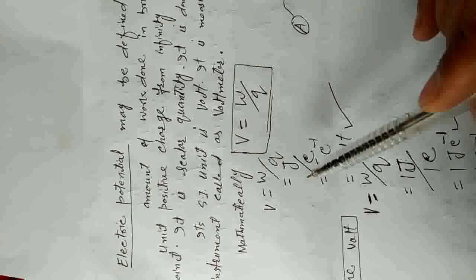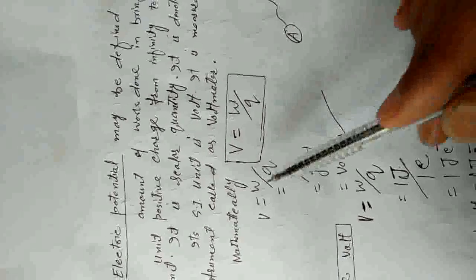We derive the SI unit of electric potential from V = W/Q. The SI unit of work is joule and the SI unit of charge is coulomb, so joule per coulomb is the SI unit of electric potential. This joule per coulomb is called volt.